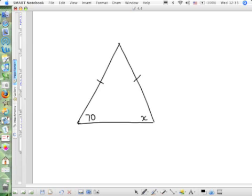So these are my base angles, which are equal to each other. So what is the value of x? 70. We could also use that information for something like this.